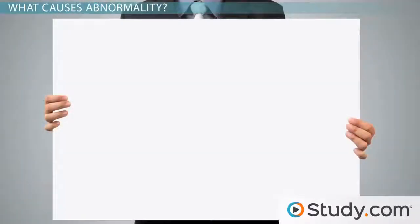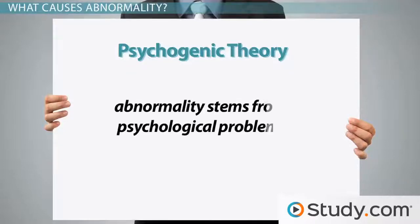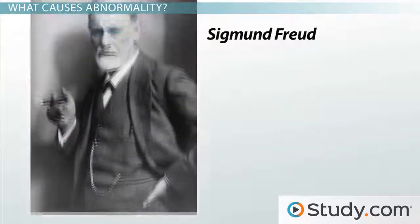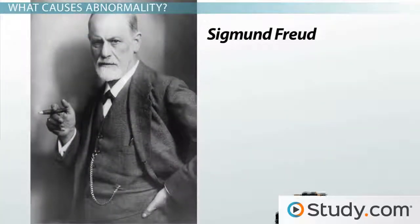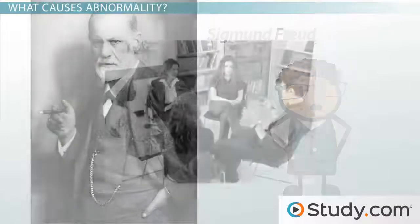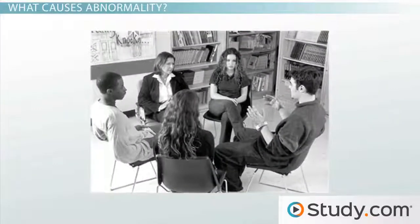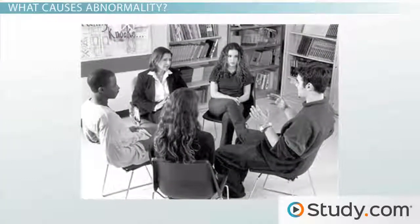Compare that to psychogenic theory, which says that abnormality stems from psychological problems. For example, Sigmund Freud might say that the woman in the cafe has an underdeveloped superego, which means that she can't stop her urges, like wanting to call out in a public place. Treatment for abnormality based on psychogenic theory includes talk therapy and hypnosis.